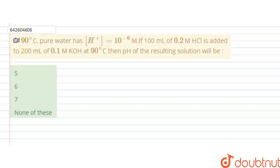Hello students, question is at 90 degrees Celsius, pure water has H plus concentration that is 10 raised to the power minus 6 molar.